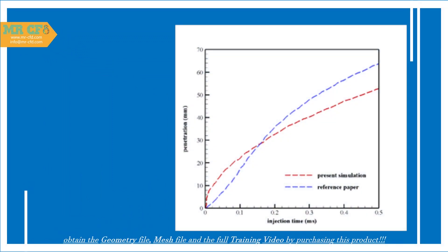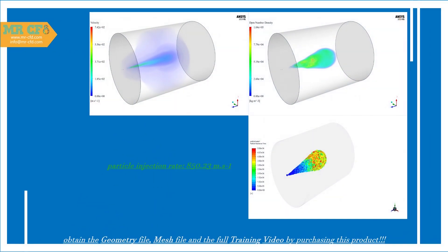At the end of the solution process, the results of the present numerical study are compared and validated with the experimental results of the mentioned article. Validation is based on Figure 3 of the article. Since the simulation was performed in a time interval of 0.5 microseconds, the results were compared only in this time interval. This simulation was performed at an injection pressure of 300 MPa, which, according to the Bernoulli principle, determines the particle injection rate.